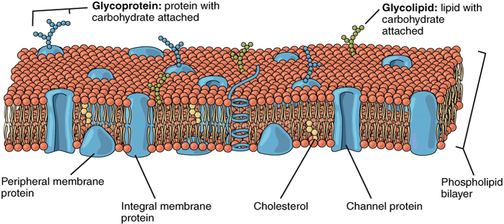Distinct types of membranes also create intracellular organelles, including endosomes, smooth and rough endoplasmic reticulum, sarcoplasmic reticulum, Golgi apparatus, lysosome, mitochondrion outer membranes, nucleus, peroxisome, vacuole, cytoplasmic granules, cell vesicles, clathrin-coated vesicles, COPI-coated and COPII-coated vesicles, and secretory vesicles.